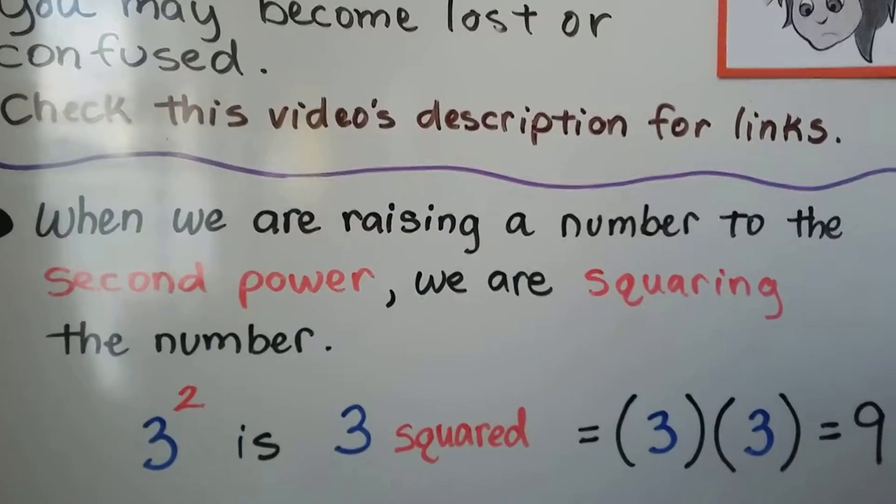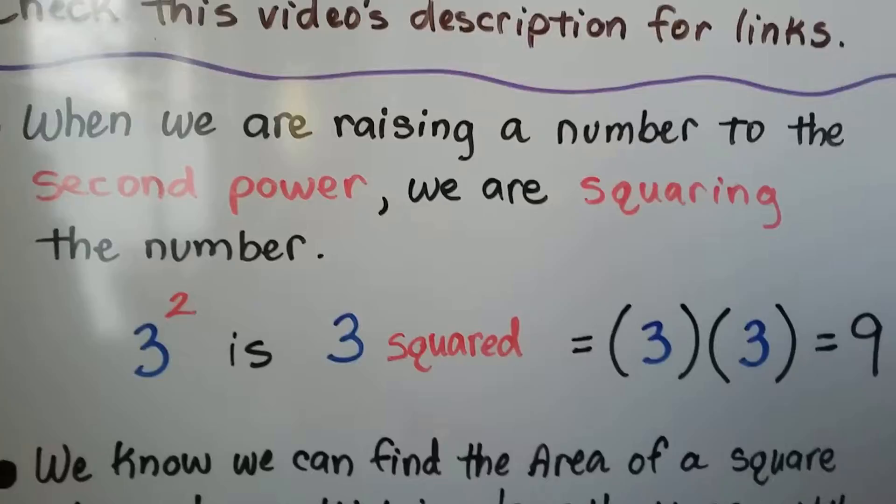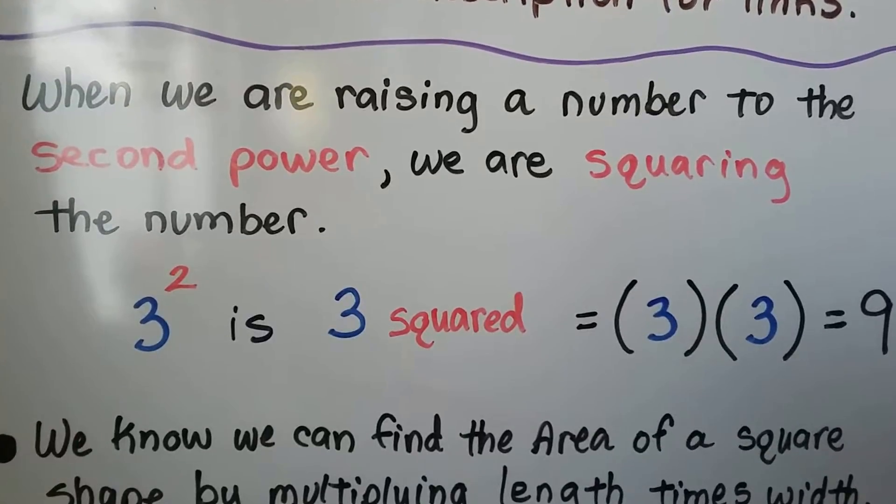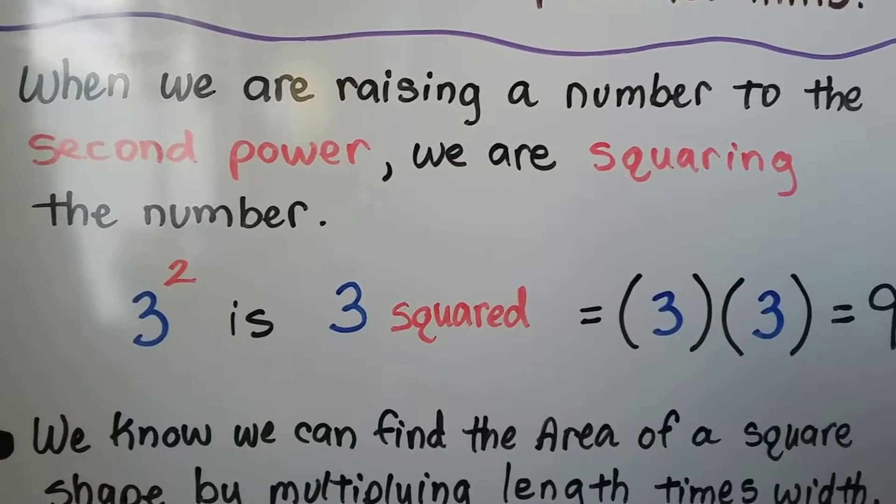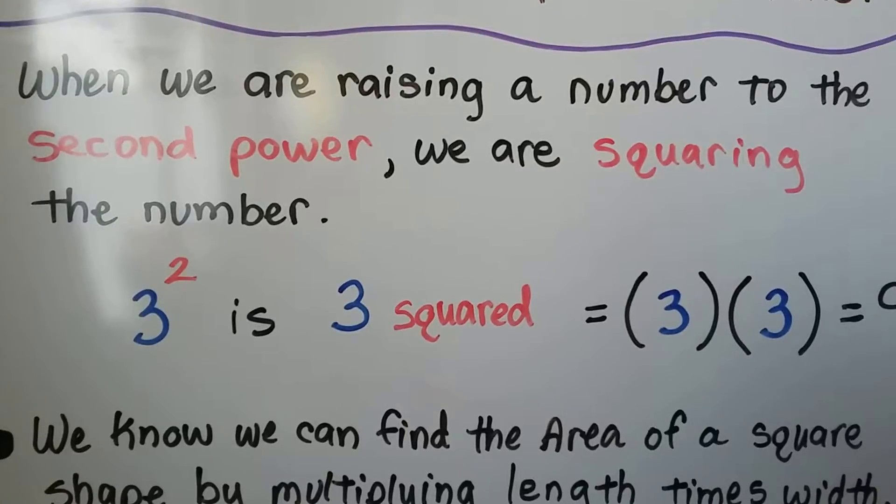When we're raising a number to the second power, we're squaring that number. 3 to the second power is 3 squared. It means 3 times 3, and that equals 9.